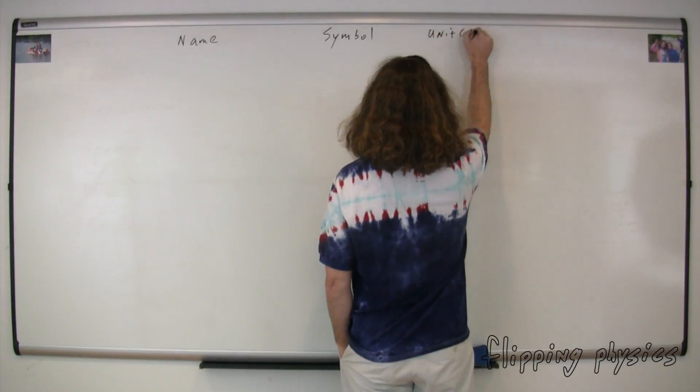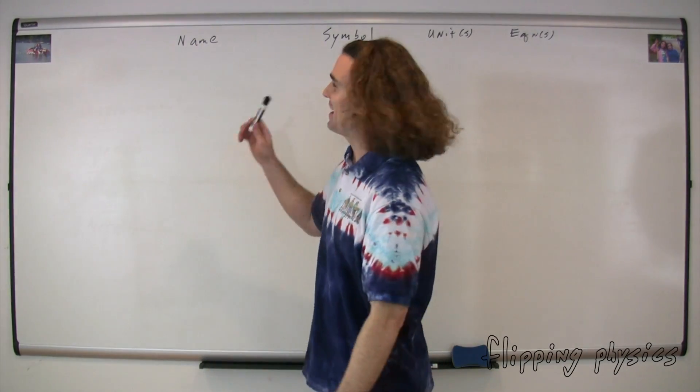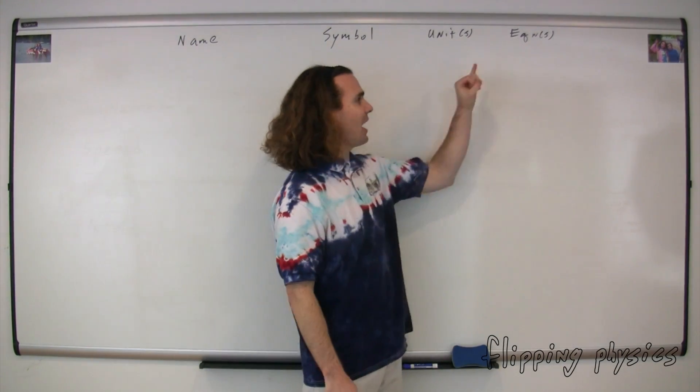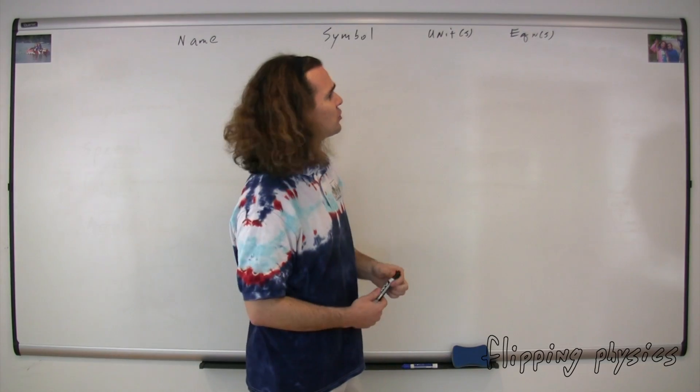Most of our friends will have a name, a symbol, at least one unit or dimension, and at least one equation. So far, we have met five friends in this class.